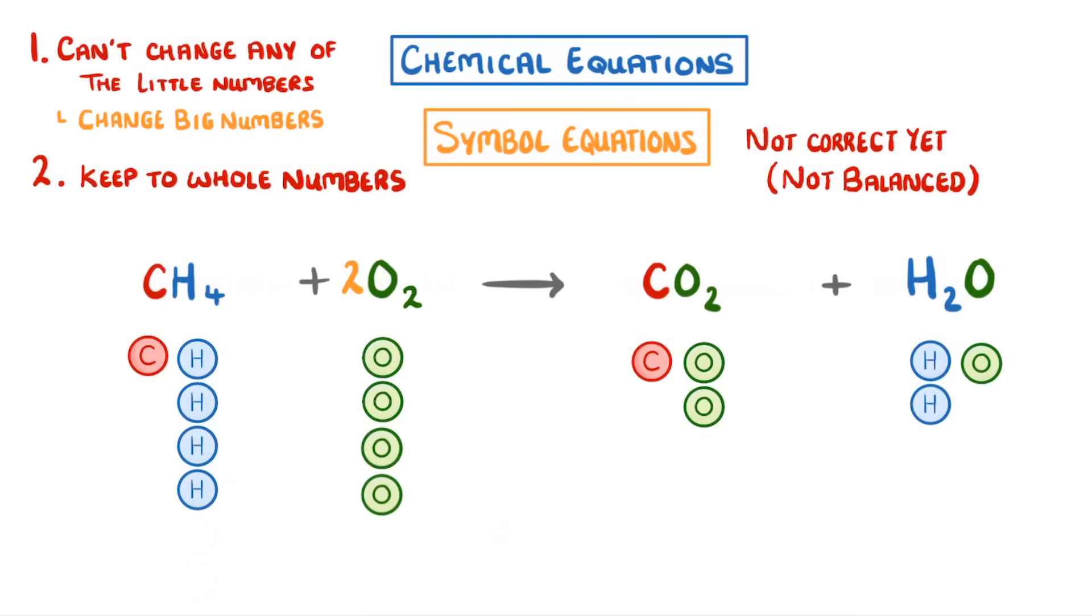This leaves us needing 2 more hydrogens and 1 more oxygen on the right, which we can get by increasing the number of water molecules from 1 to 2. So we now have the same number of each type of atom on both sides of the reaction, and so we're done.